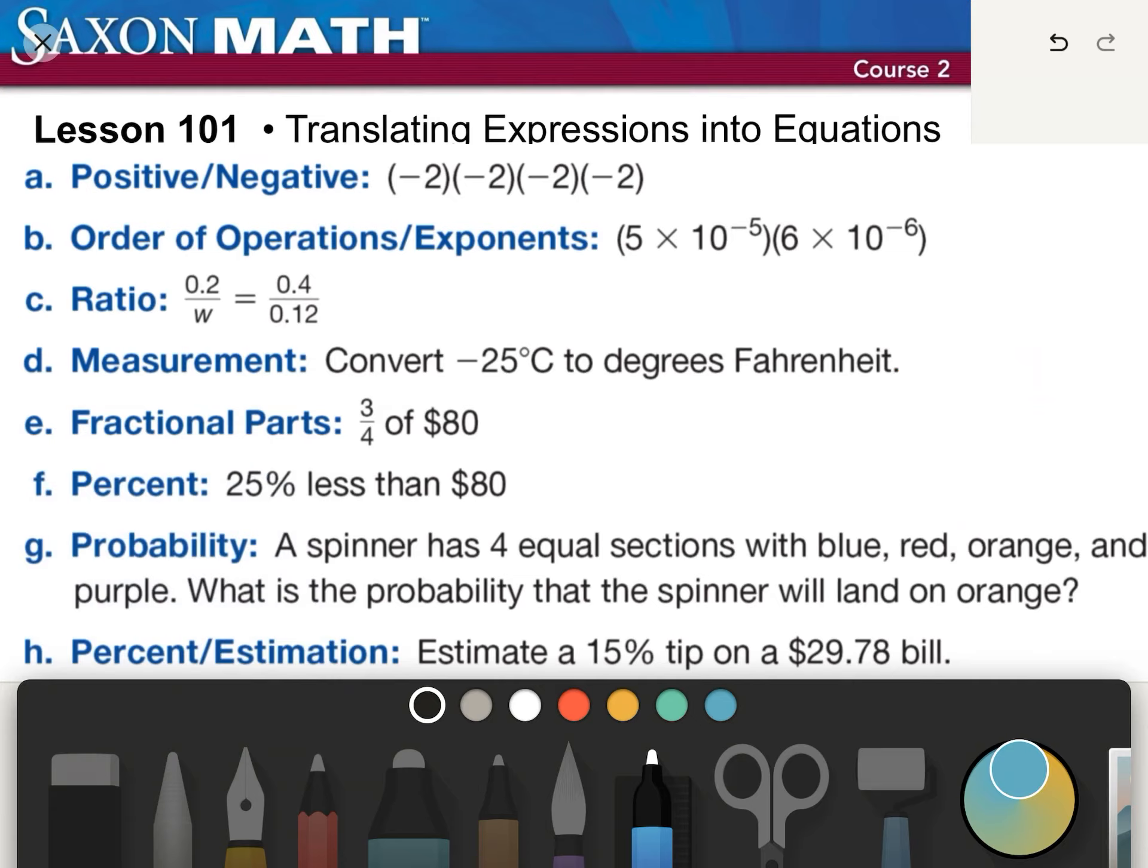Estimate a 15% tip on a $29.78 bill. But since we're estimating, we're really just looking at this as 30. And so really, we can just look at this as 3 times 15 times 10 for our mental math. But since we are looking at this in terms of money, it's 450 pennies or $4.50.